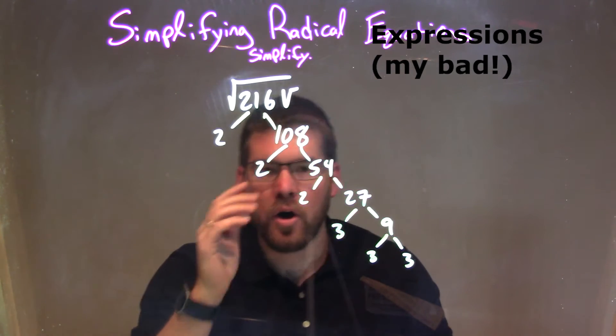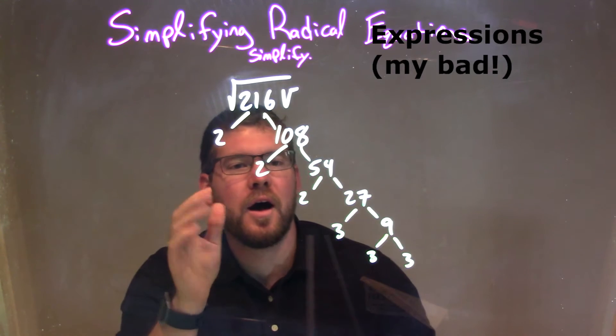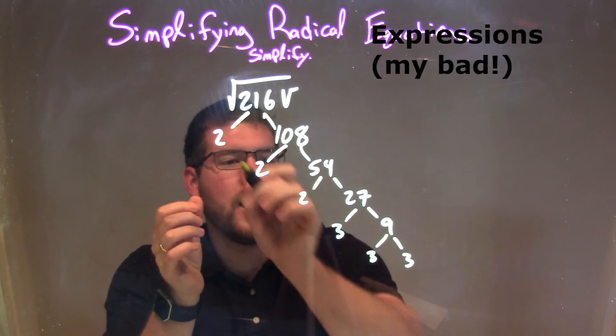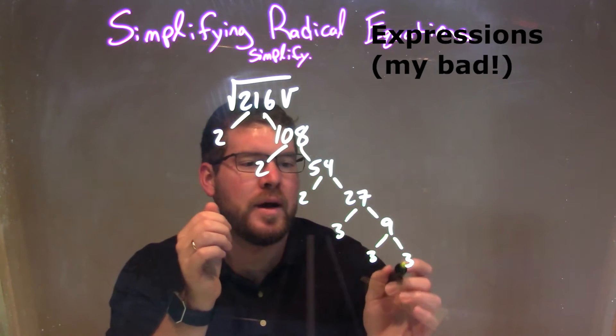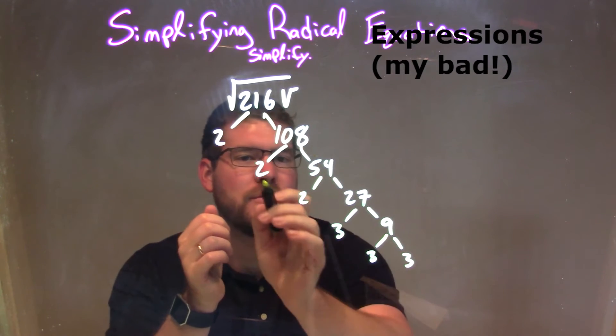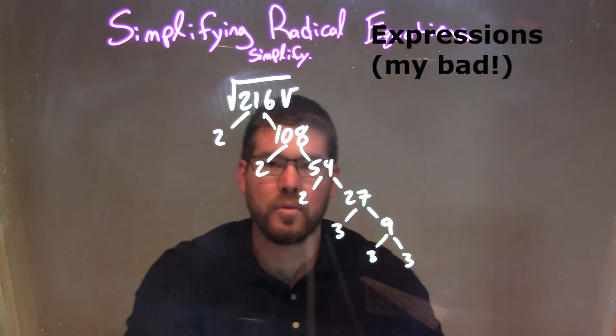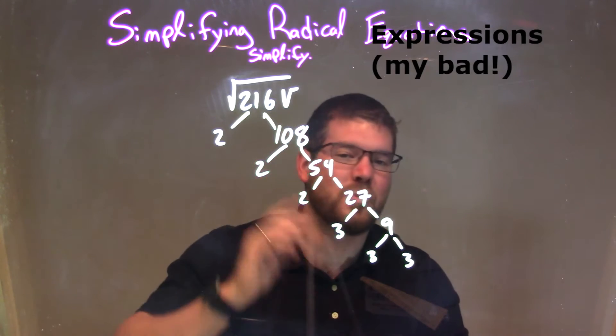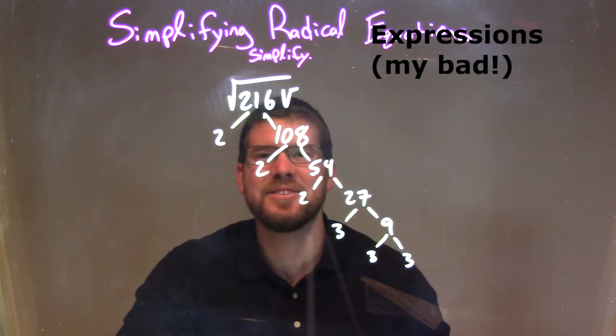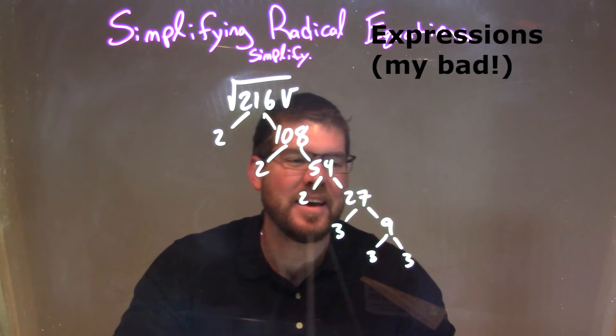So now I have all the prime numbers multiplied out. That's 2 times 108, and 108 was 2 times 54, 54 was 2 times 27, 27 was 3 times 9, and 9 was 3 times 3. So 2 times 2 times 2 times 3 times 3 times 3 gives me 216.